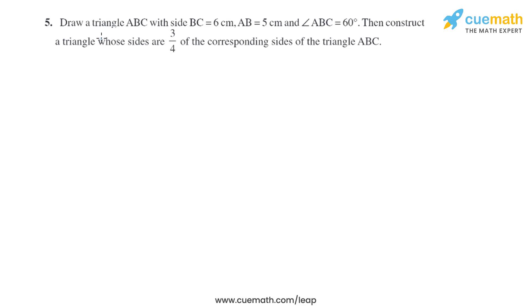Question 5 of this exercise says draw a triangle ABC with side BC equals 6 centimeters, AB equals 5 centimeters, and angle ABC equals 60 degrees. Then construct a triangle whose sides are three by four of the corresponding sides of the triangle ABC.